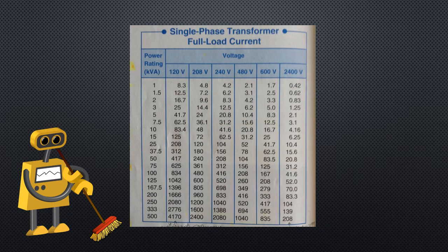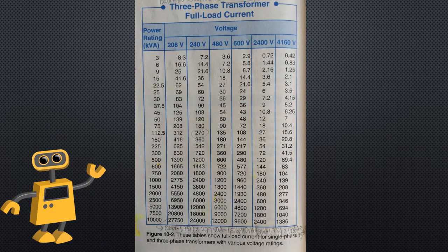For three-phase transformers, multiply the voltage by 1.732 before calculating the power. The power rating of a transformer indicates the maximum allowable power. Figure 10-2 contains tables of full load currents for various transformers and voltages.